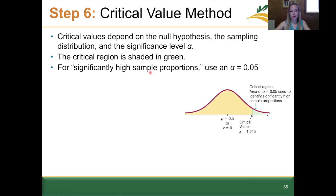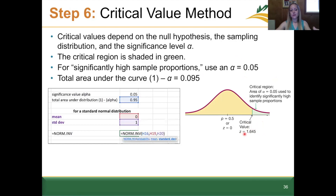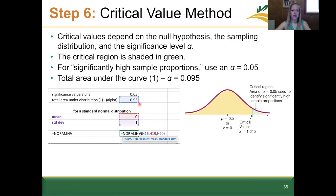For a significantly high sample proportion, we're going to use an alpha value of 0.05. To find this critical value — given here as z = 1.645 — we understand that the total area under the curve is 1. With an alpha value of 0.05, we take 1 minus 0.05, which is 0.95. That green critical region is the same as our alpha value of 0.05, so thinking in terms of cumulative area from the left, we take 1 minus 0.05 to get 0.95.